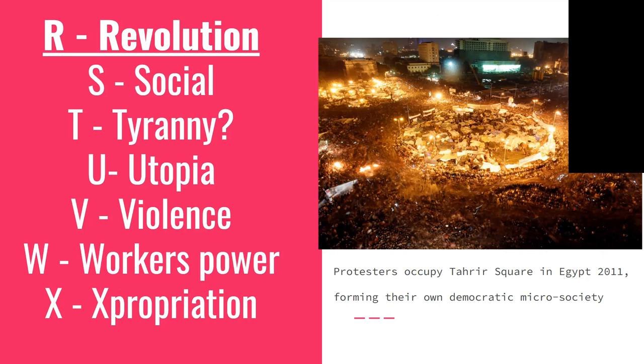W is for workers' power. In a struggle disruptive enough to shut down the various operations of society, it then becomes necessary to start those back up again, because the workers who are protesting still need food, water, education, health care. Historically we have great examples of workers who managed to shut down a particular city, occupy a particular place, forming democratic bodies to tackle the practical and political tasks that come with uprisings. You had the Soviets in Russia, the Codones in Chile, the Shoras in Iran.